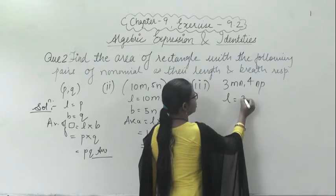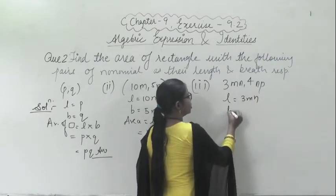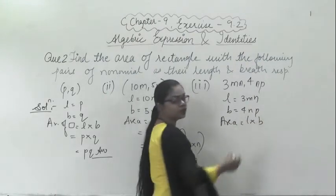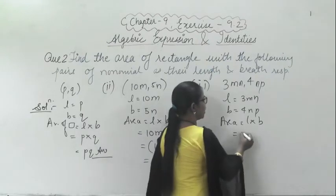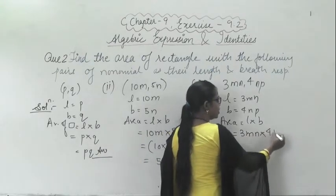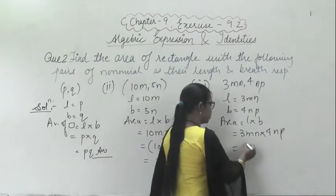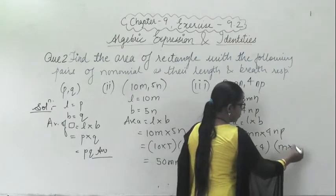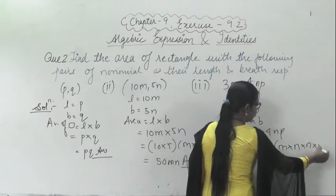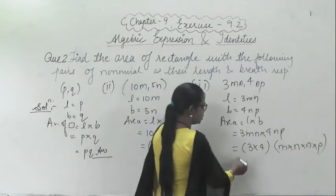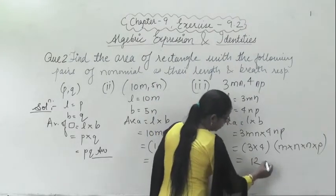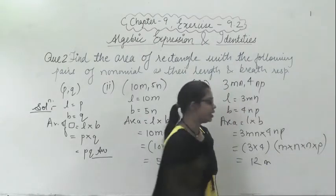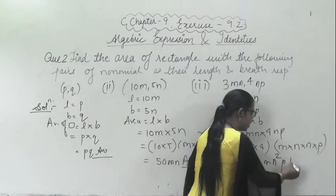The next one: length is equal to 3mn and breadth is equal to 4np. Area is equal to length into breadth. So here I can write down 3mn into 4np. From here: 3 into 4 gives 12, and m into n into n into p — n into n is n squared. So the answer is 12mn²p.